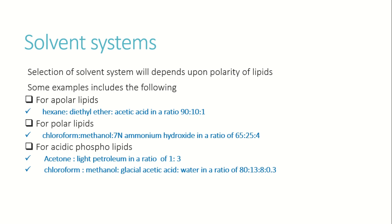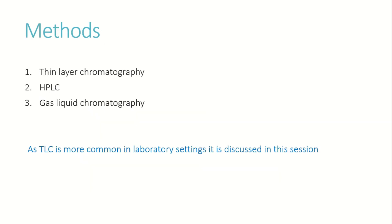For polar lipids, hexane is the mobile phase. For phospholipids, we use acetone and light petroleum in the ratio of 1:3, or chloroform, methanol, and glacial acetic acid in the ratio of 80:13:0.3. The more polar the compound, the more polar the solvent system required.